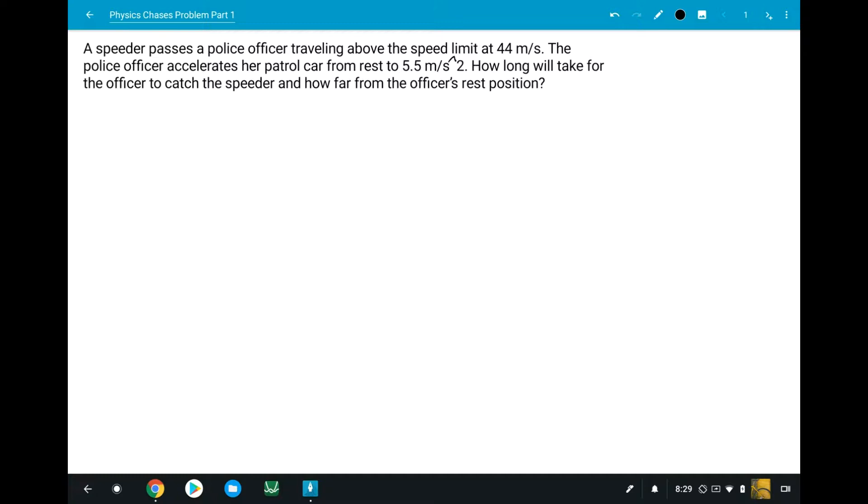So to tackle this problem, I would recommend you draw a position time graph. Okay, and the zeroth position is the police officer's rest position and the speeder is at a constant velocity, a nice sloping line. So here's the speeder. The police officer, she's going to accelerate and it's going to make kind of a parabolic change because she's changing velocity. So they're going to cross at some point in time and distance.